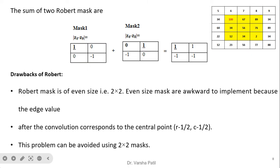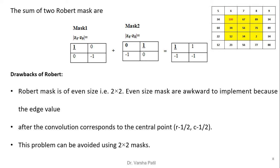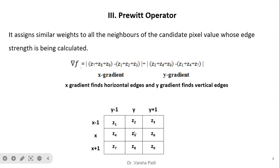The drawback of the Robert operator and ordinary operator is that both are 2x2 in size, so they do not cover all neighbors of a pixel. Even-sized masks are awkward to implement because they don't properly consider all portions of the image and tend to incline toward a particular direction. This problem can be avoided by using odd-sized 3x3 masks.